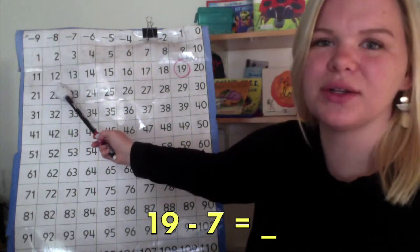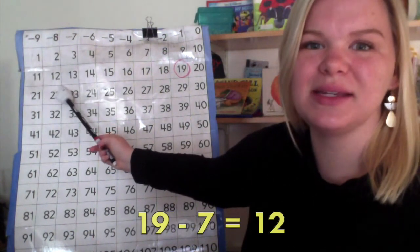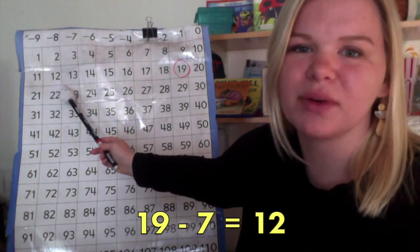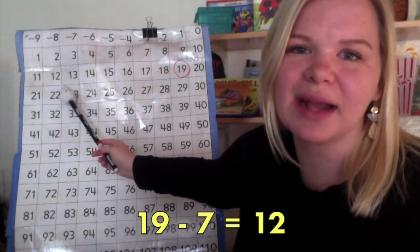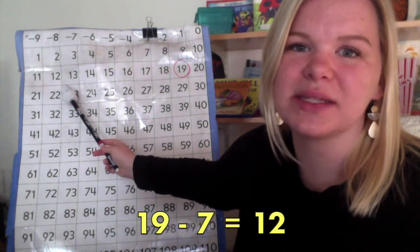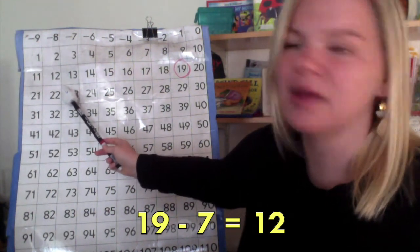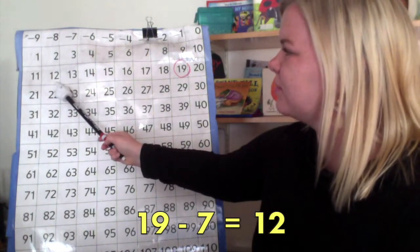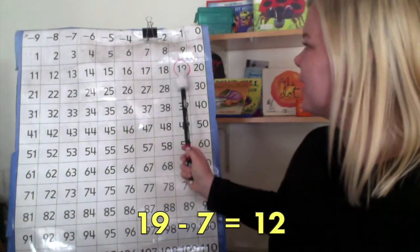We landed on 12. So, 19 minus 7 equals 12. Remember, when we subtract, the answer is always a smaller number than the number we started with. Right? 12 is smaller than the number 19.